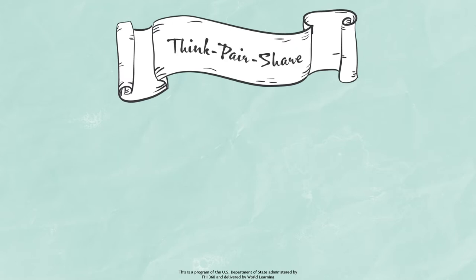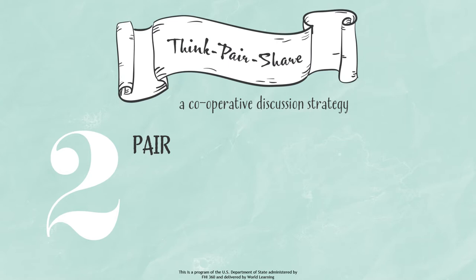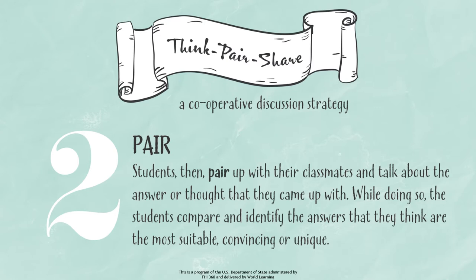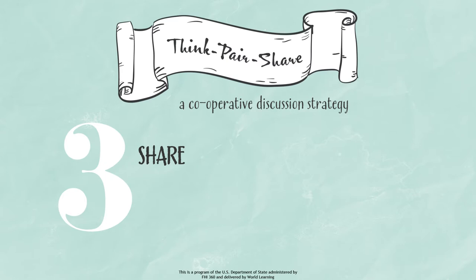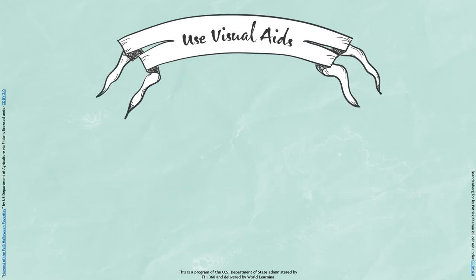Think Pair Share: Think pair share is a cooperative discussion strategy that involves three steps. Think — the teacher provokes students' thinking by posing a question, prompt, or observation, and students take a few minutes to think about it. Pair — students then pair up with their classmates and talk about the answer or thought they came up with, comparing and identifying the answers they think are most suitable, convincing, or unique. Share — after discussing the question, each pair shares their responses and the thinking behind them with the whole group or class.